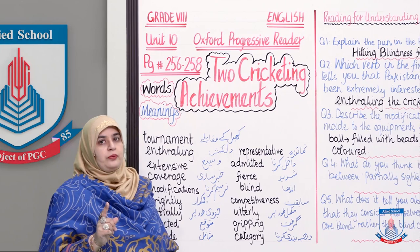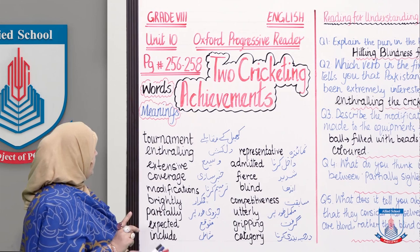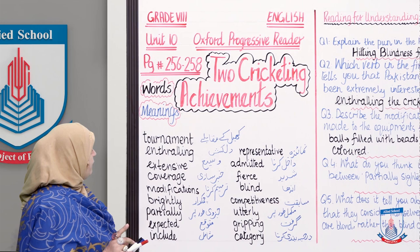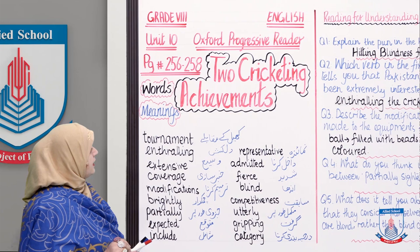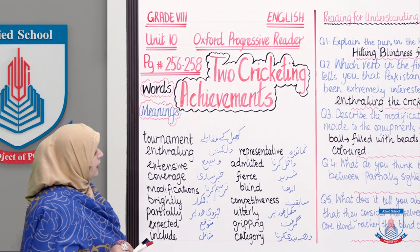Here are the vocabulary words and their translations from Document 1: tournament — muqabla; enthralling — dilkash; extensive — wasi; coverage — khabar saazi; modifications — tarmeem karna; brightly — chamakdar; partially — juzwi taur par; expected — mutawaqqa; include — shamil; representative — numayinda; admitted — daakhil karna; fierce — shadid; blind — andha; competitiveness — musabikat; utterly — mukammal taur par; gripping — grift; category — darja / bandi karna.